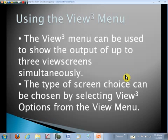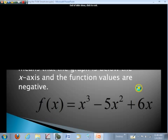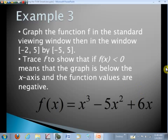Here we go with an example 3. Let's graph the function f in the standard viewing window. Then in the window negative 2 to 5 and then negative 5 to 5. And then let's trace f to show that if f of x is less than 0, that means that the graph is below the x-axis and the function values are negative. And so notice we have a cubic function there.